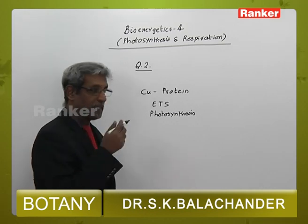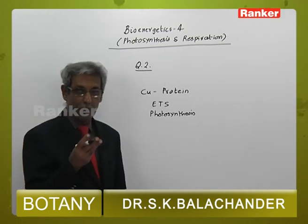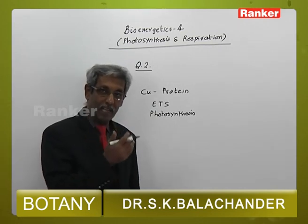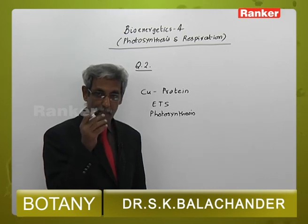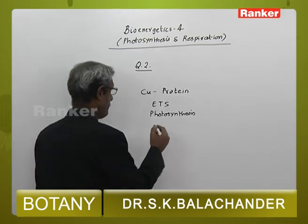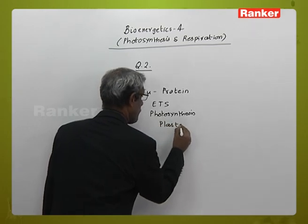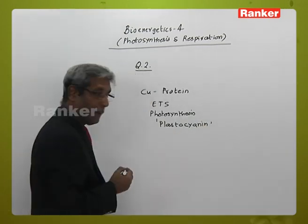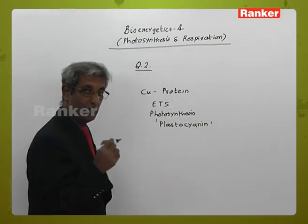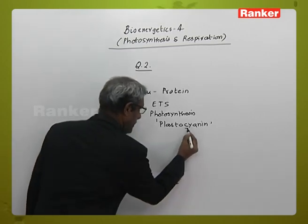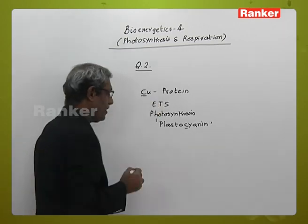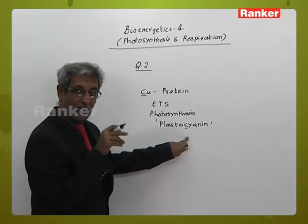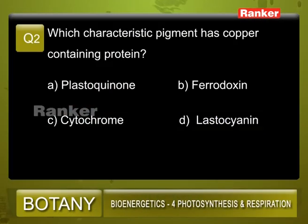Cytochromes are a series — cytochrome B, B1, C, F and so on — present both in the chloroplast as well as in the mitochondria. Choice D, Plastocyanin, is a protein which contains copper. The easy way to memorize Plastocyanin is to remember C and C. Plastocyanin is a blue pigment protein compound present in the light reactions of photosynthesis. Hence the answer is D.